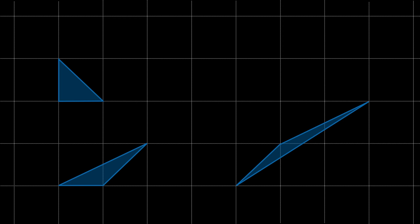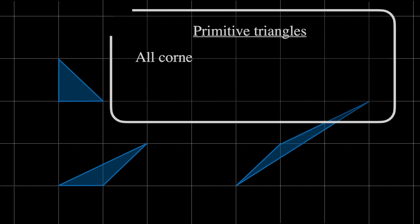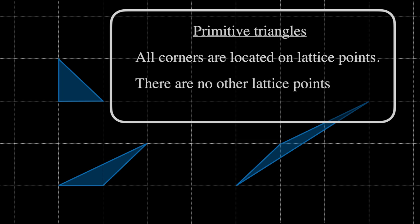The definition of a primitive triangle is such that all the corners of the triangle are located on lattice points and there are no other lattice points on or within the boundary of the triangle.